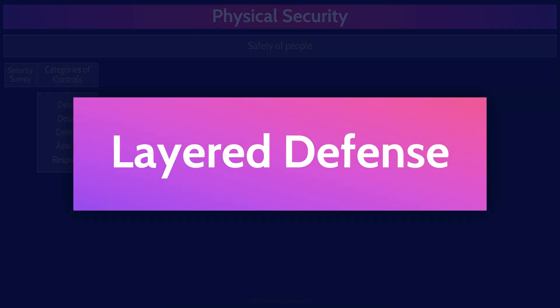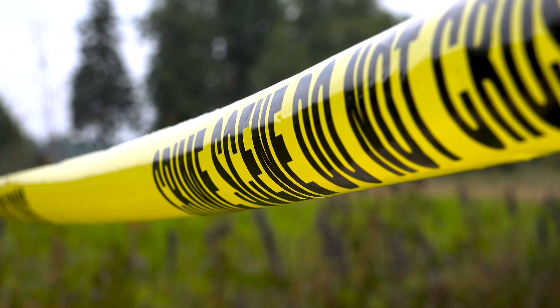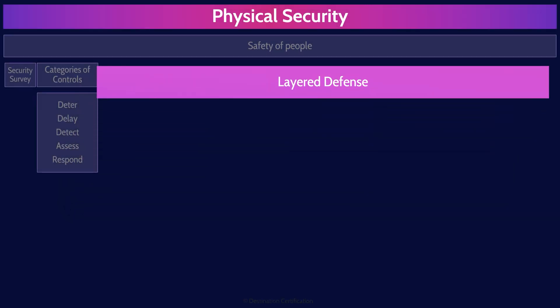When we are implementing these controls, we never want to implement a control in isolation. If there is only one control protecting an asset and that control fails, then bad stuff will happen. This is why we want to have multiple layers of controls, and in each layer have a combination of preventive, detective, and corrective controls — or in physical security terms, deterrent, detective, and response controls. This is the concept of defense in depth: multiple layers of defense.